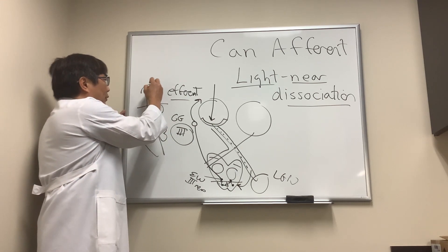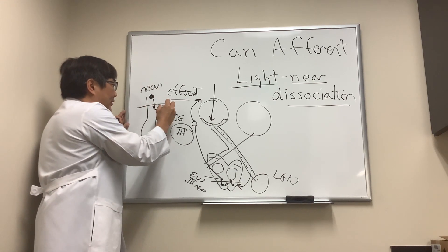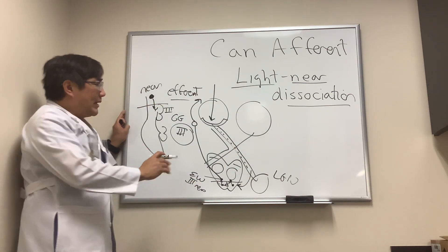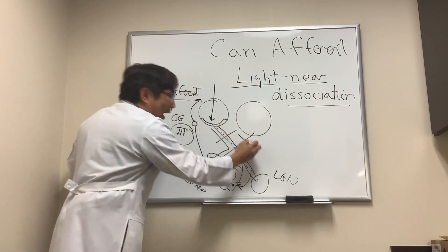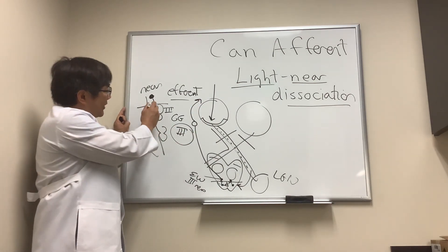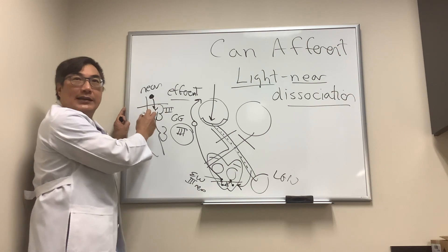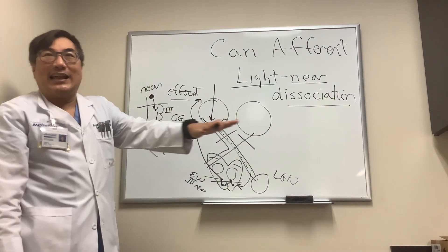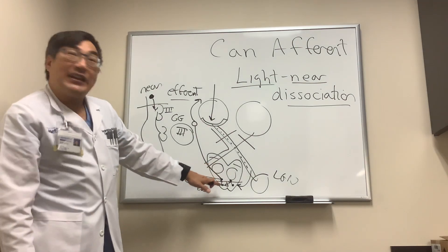So the near pathway can talk directly to the Edinger-Westphal nucleus without the light pathway. And that means if you have bilateral no-light perception vision from a bilateral optic neuropathy, you can still activate the near response and get light-near dissociation of both pupils. Because you don't need the light pathway to activate the near pathway.